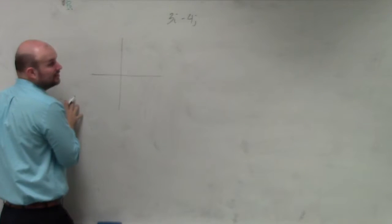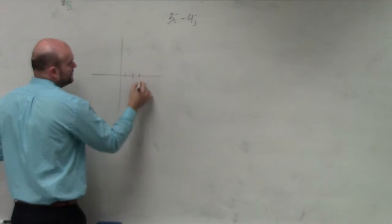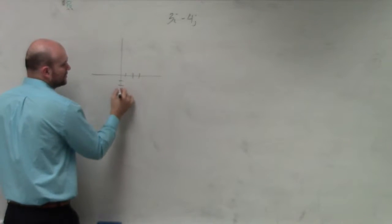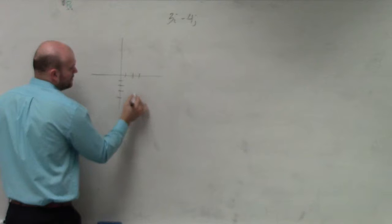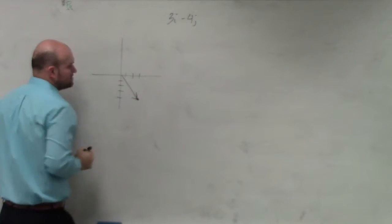This has three linear units horizontal, so one, two, three, and then negative four vertical units. There's my vector.